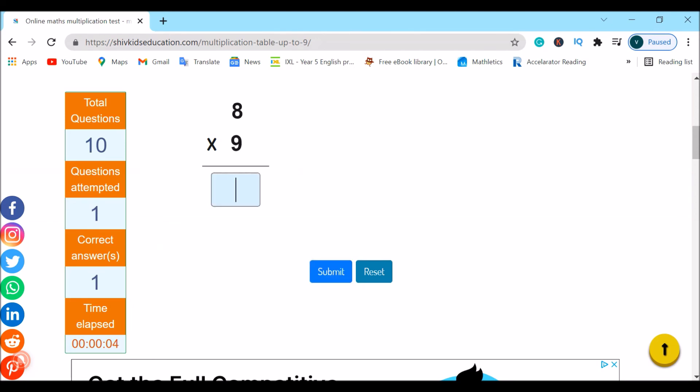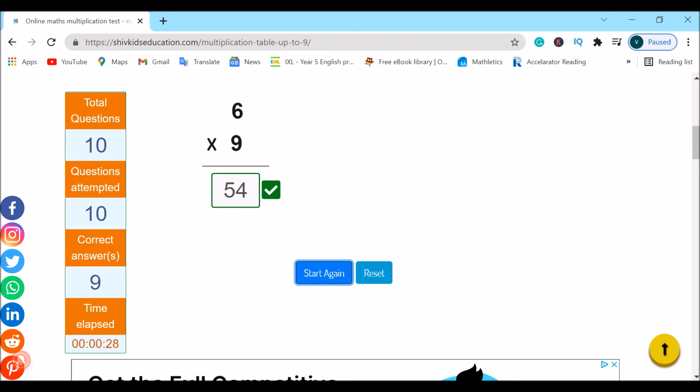49. 72. 45. 48. Yes. 18. This one I'm going to do wrong. 3. As you can see, it says that it is wrong. Let's move on. 24. 18. 36. 54. Yes. My questions are up. And as you can see, instead of correct answers 10, it says correct answers 9. And I attempted 10 questions. That means I got one question wrong. And my time elapsed is 28 seconds.